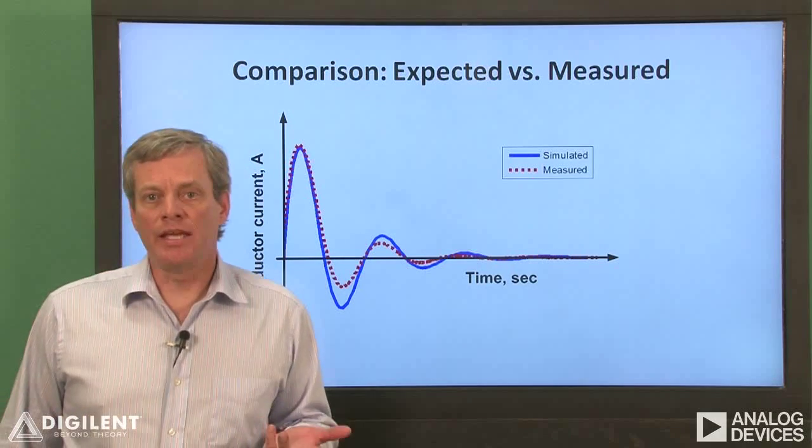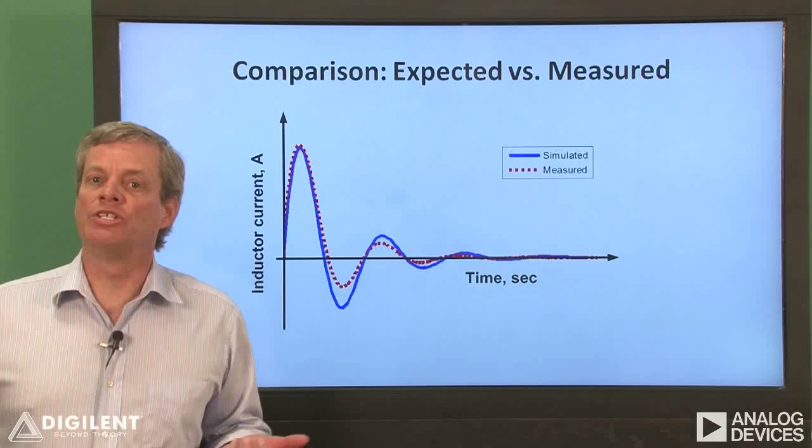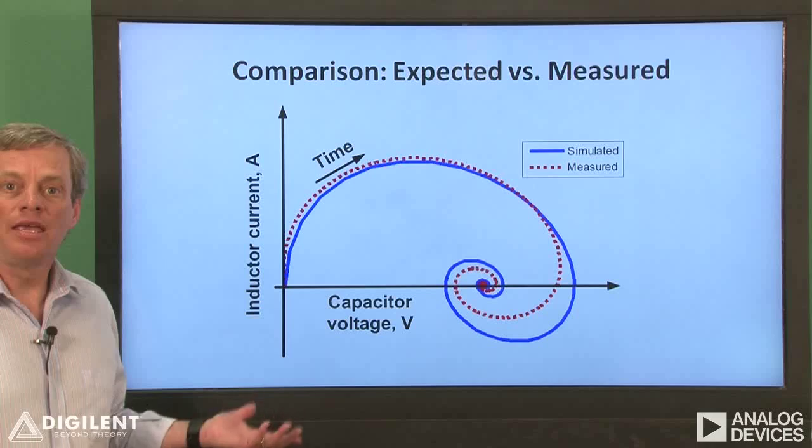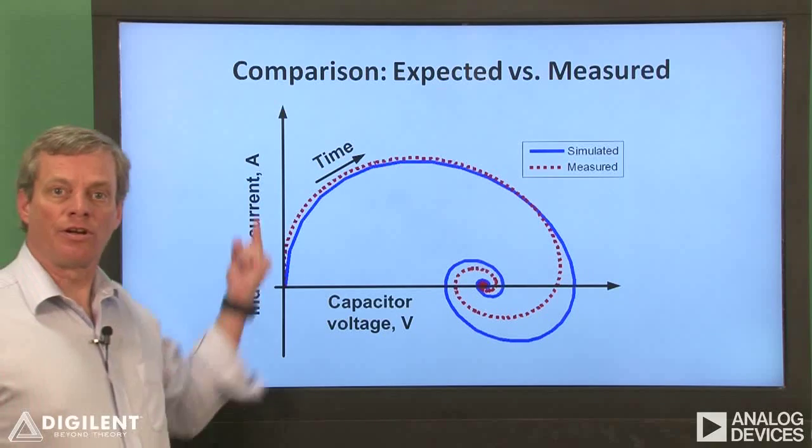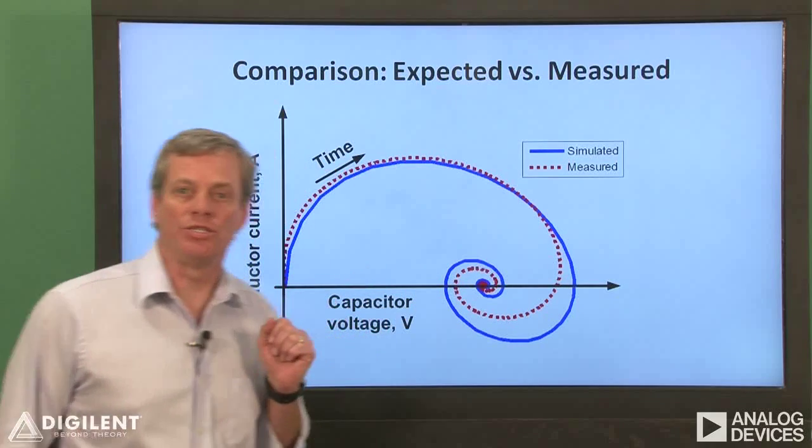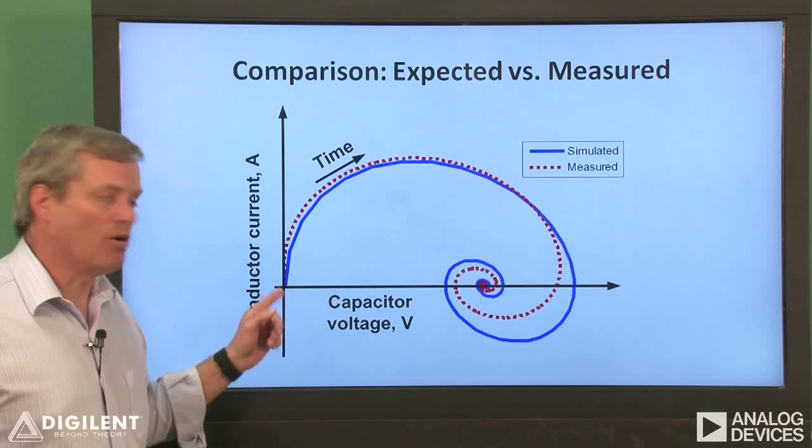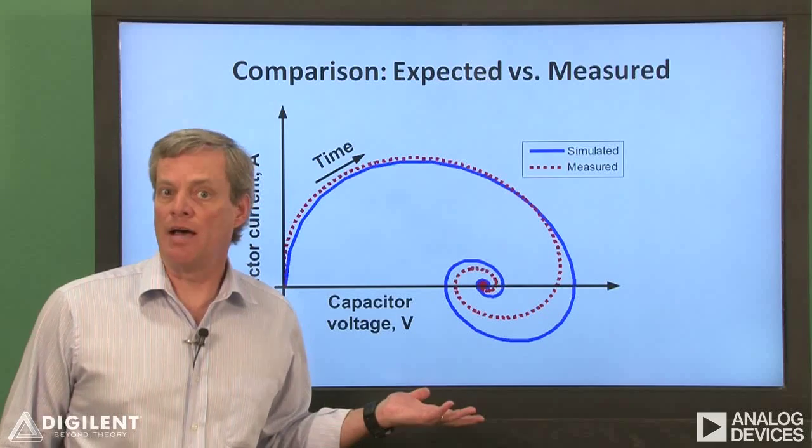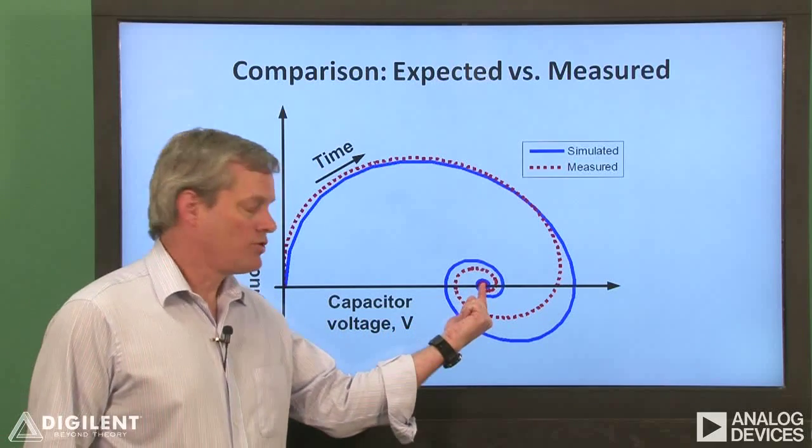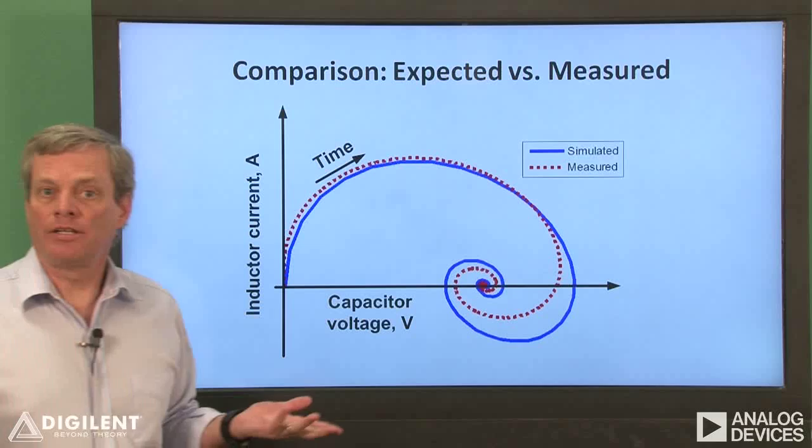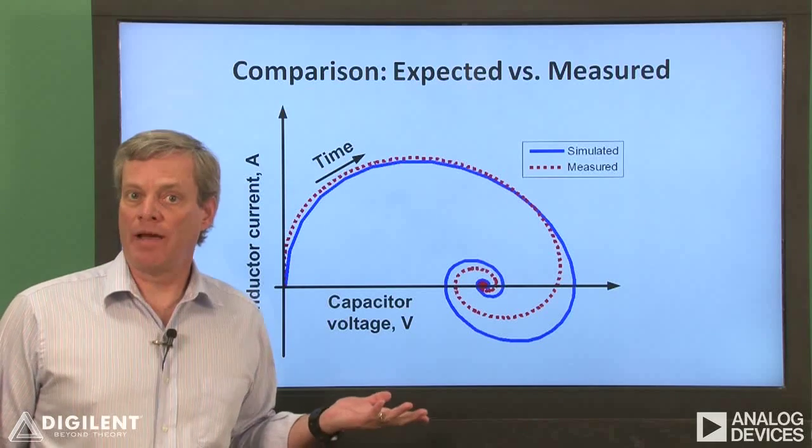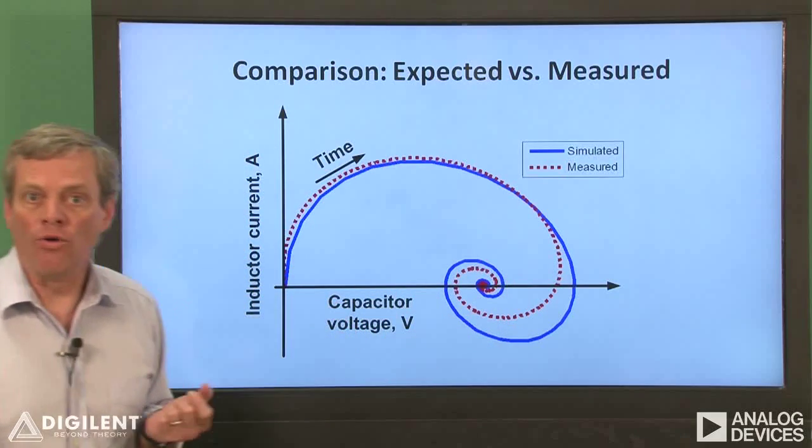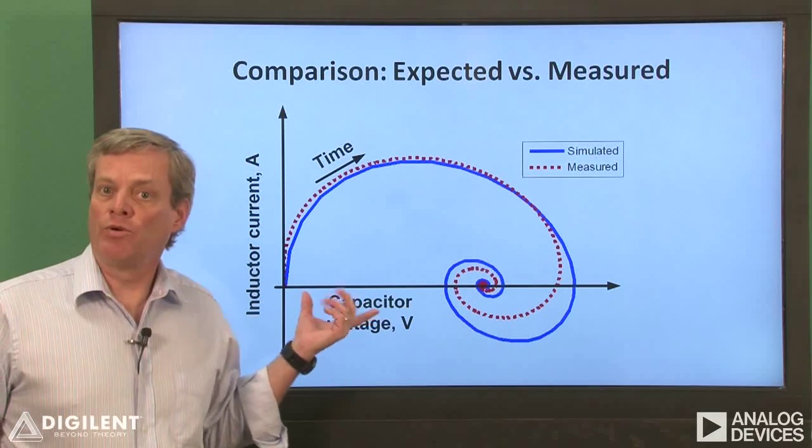Another useful way to present data about system states is to use a state trajectory. The state trajectory is a plot of the states as functions of one another. Here, I've plotted the inductor current versus the capacitor voltage. The plot starts at 0, 0. Both the inductor current and the capacitor voltage are 0 before we apply the step and goes to 2.0. The final inductor current is 0 amps and the final capacitor voltage is 2 volts. Time is increasing in the direction shown, although specific time points aren't labeled.